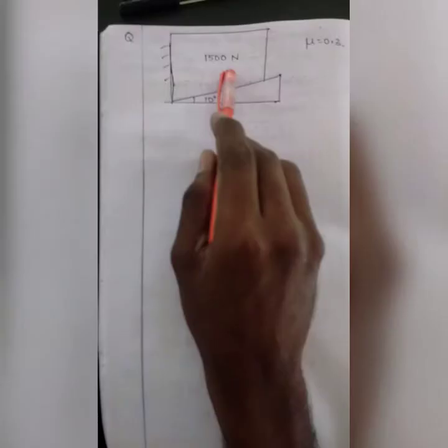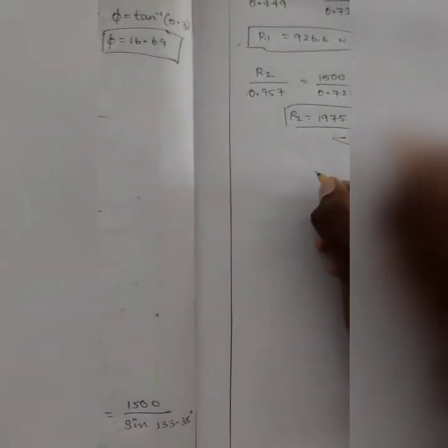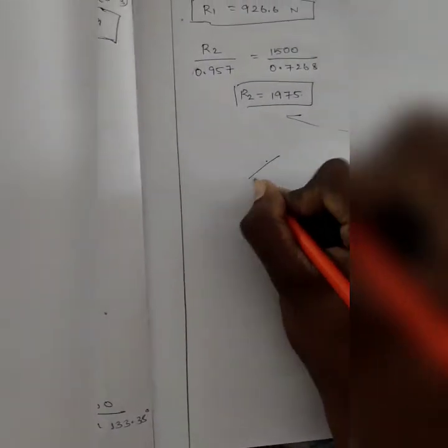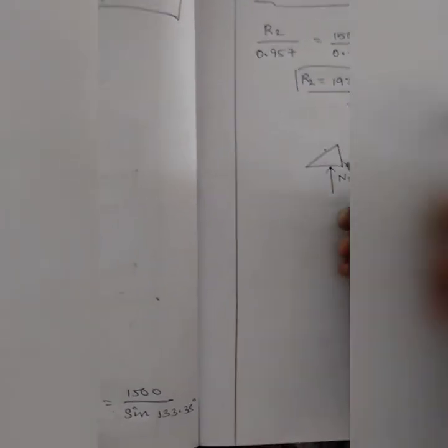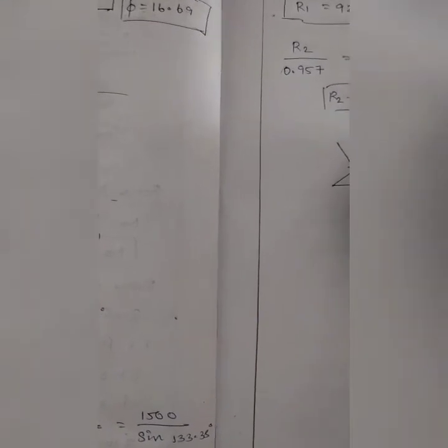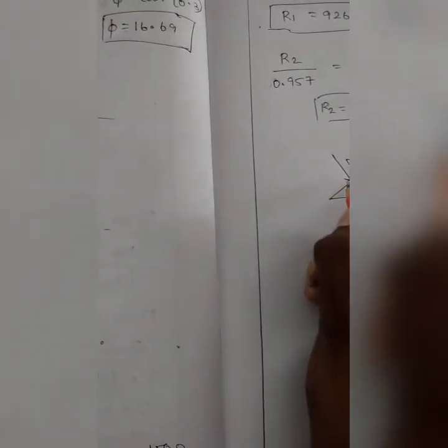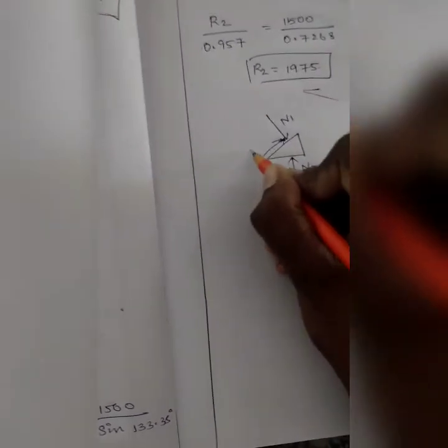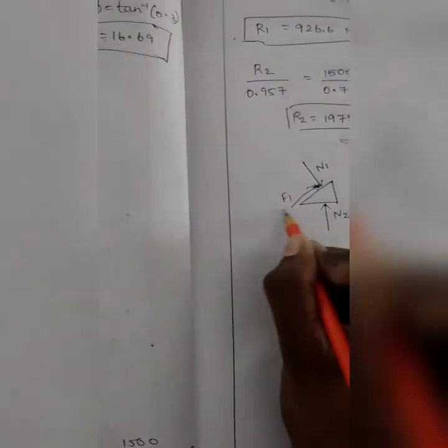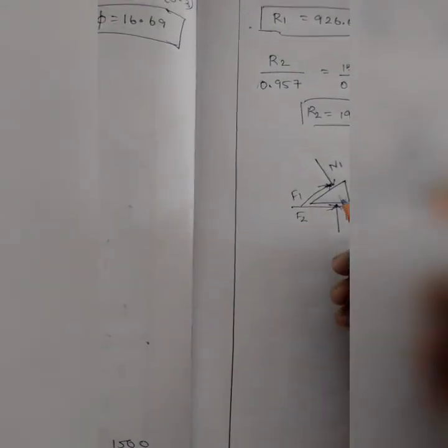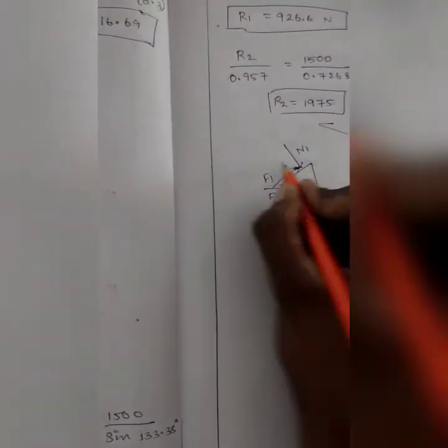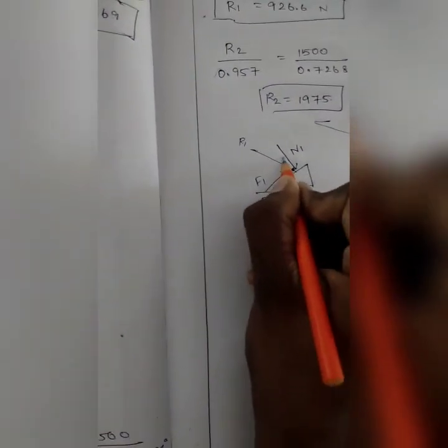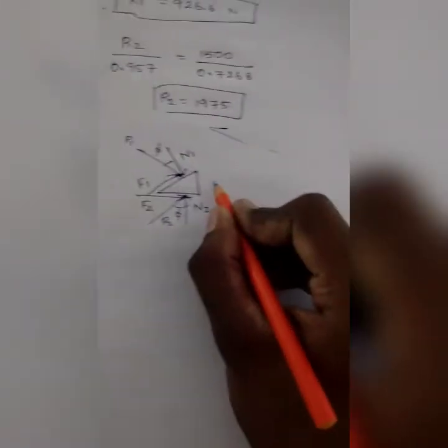Next is the wedge free body diagram. The wedge has a normal force and frictional force. The friction force is F2, the resultant is R2, and the angle is φ. The resultant is R1. Now we know the angle.